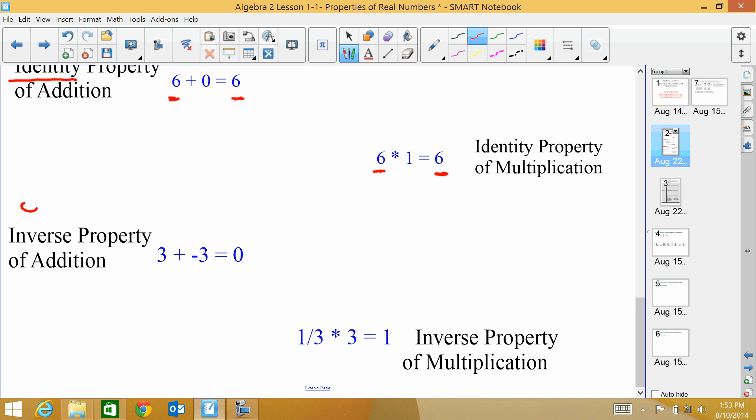Inverse property. Inverse in math means opposite. So if I'm doing inverse property of addition, then I'm adding opposite numbers. So 3 is the opposite of negative 3. So if I add those together, then I get 0. So when you're adding opposites, that's inverse property of addition.